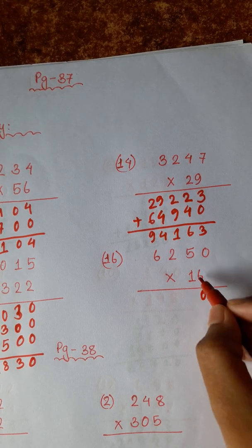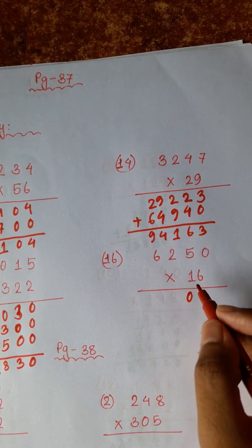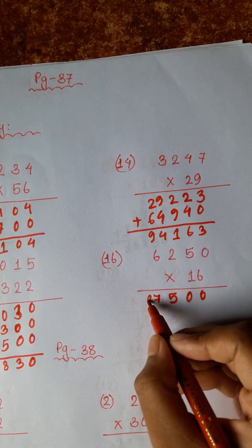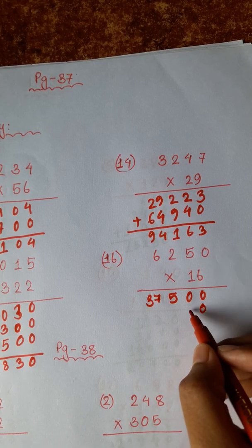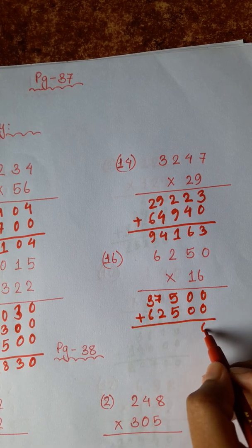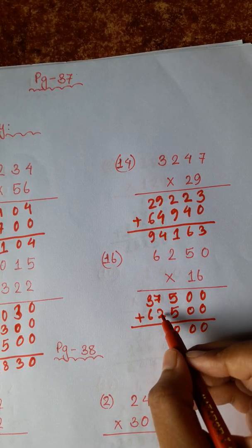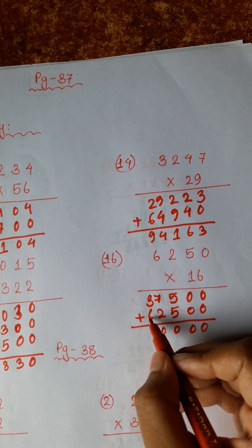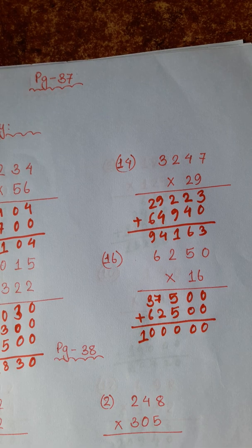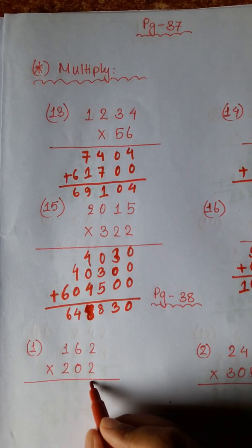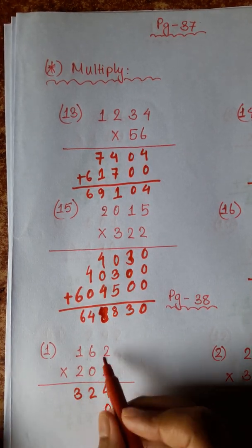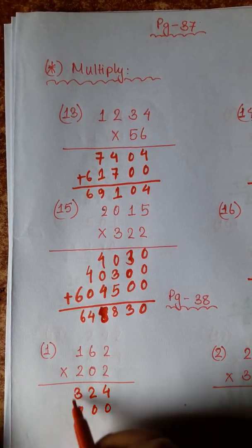6 zeros are 0. 5 × 6 are 30. 6 twos are 12 plus 3 is 15, carry 1. 6 × 6 is 36 plus 1 is 37. 1 zero is 0. 5 ones are 5, 2 ones are 2, 6 ones are 6.